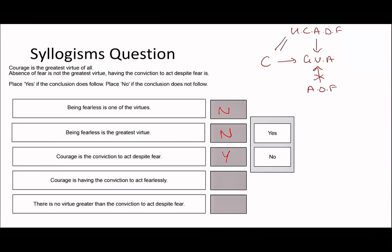You can really see what I meant in the first video: when you start off with this technique, the hardest bit will be drawing a diagram, but later it will be the comprehension aspect. Courage is having the conviction to act fearlessly — no, it's having the courage to act despite fear, not fearlessly. And lastly, there is no virtue greater than the conviction to act despite fear — that's true, because having the conviction to act despite fear is the greatest virtue. This one is more of a mental one, which is why I would definitely stick to the diagram.